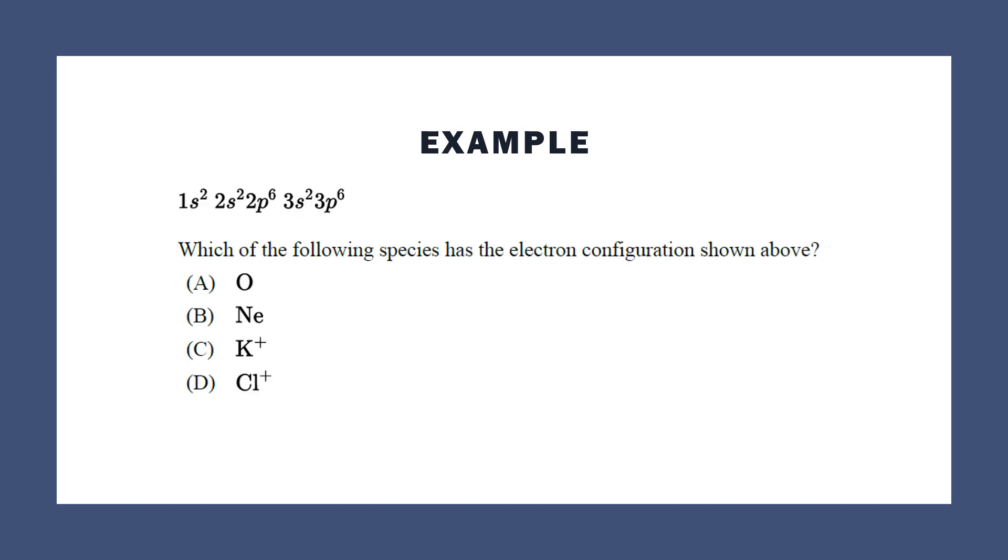Here's an example of a multiple choice question from the atomic structure part. Given the electron configuration 1s² 2s² 2p⁶ 3s² 3p⁶, which of the following species could that correspond to? You can count the electrons: 1, 2, 3, 4, 10, 12, 18, so 18 total electrons. Neutral oxygen will have 8 electrons. Neon has 10 electrons. Potassium ions—potassium normally has 19, but when it has a +1 ion it will have 18 electrons, so there's that one. Chlorine normally has 17, and they're trying to throw you off with this positive sign, so since it normally has 17, Cl⁺ would have 16 electrons, which is not correct. So the answer is C.